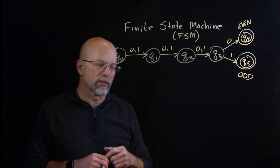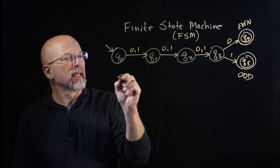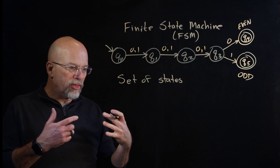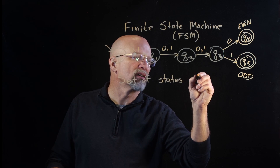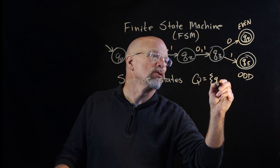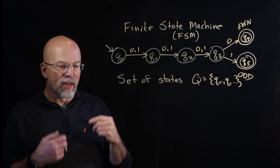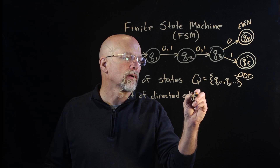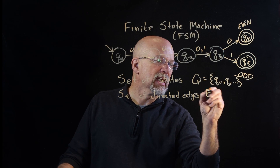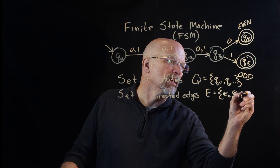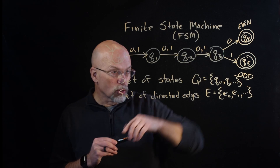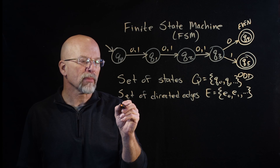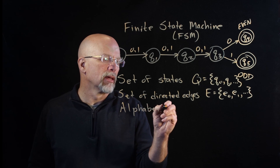An FSM, or finite state machine, consists of five things. The first is a set of states, represented in graph theory with vertices, which we'll call capital Q — so q0, q1, and so on. The second is a set of directed edges — we'll call this E, with E-sub-zero, E-one, and so on. Each one of these edges is contained in some sort of a set.